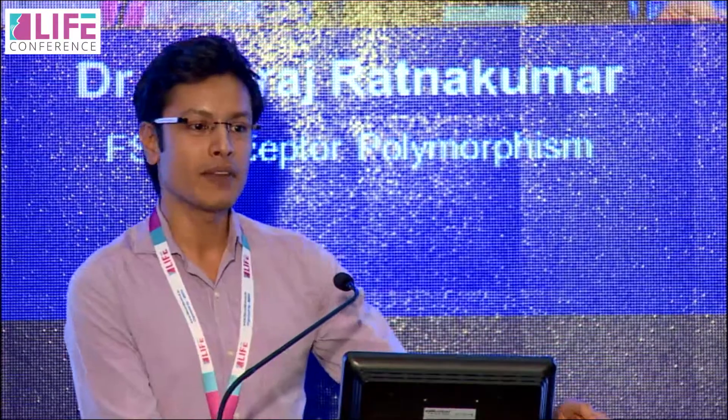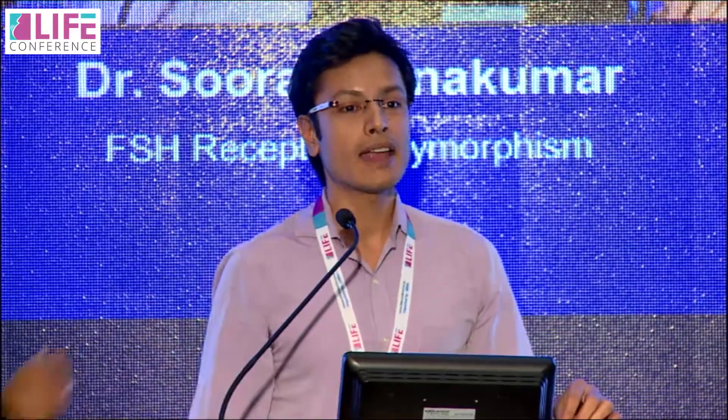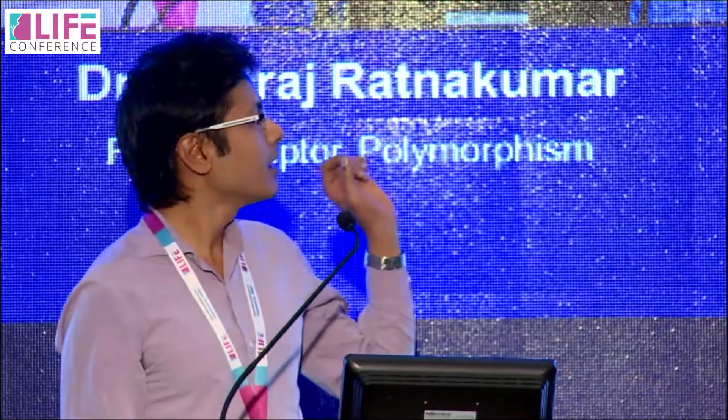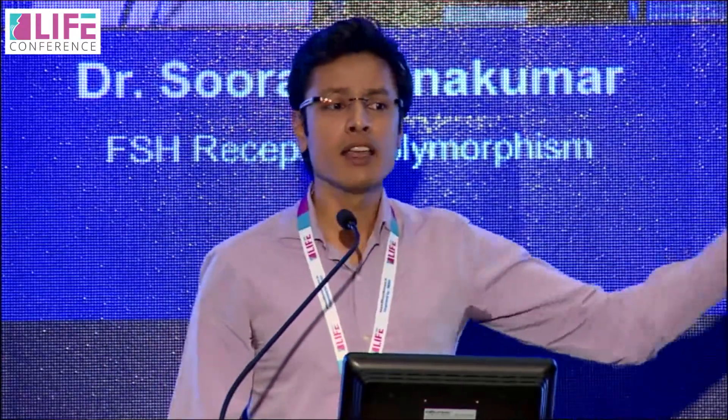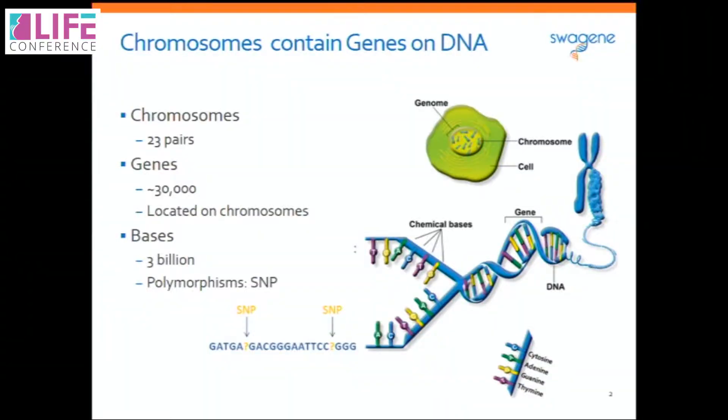We will start with a very brief primer on genetics. Every cell in our body has 23 pairs of chromosomes, which means every cell has 30,000 genes and a pair of every gene — so 60,000 genes — and all of these together constitute DNA, which comes together in the form of 3 billion bases. A base is nothing but each of these letters.